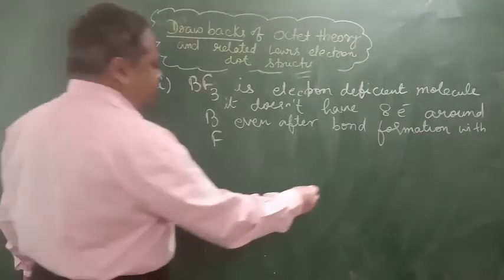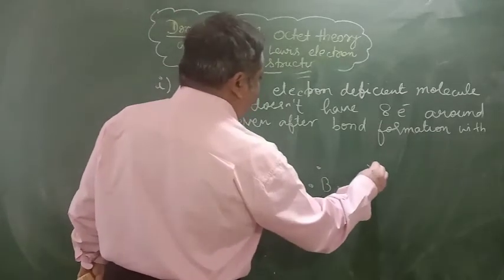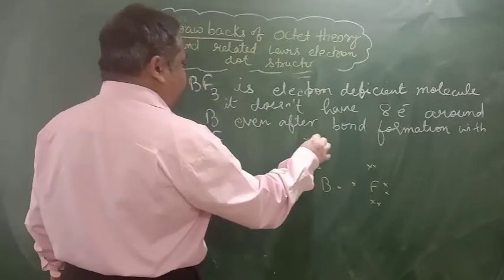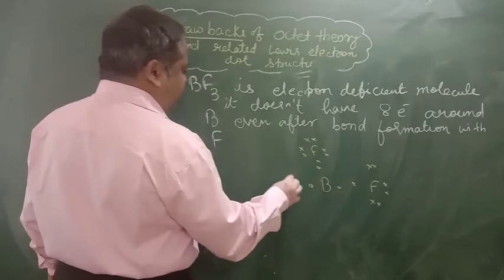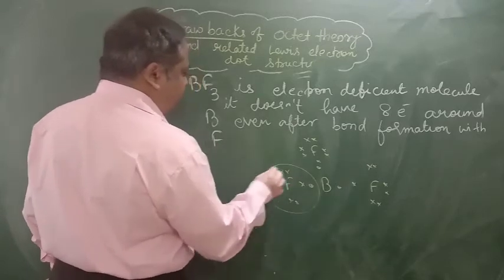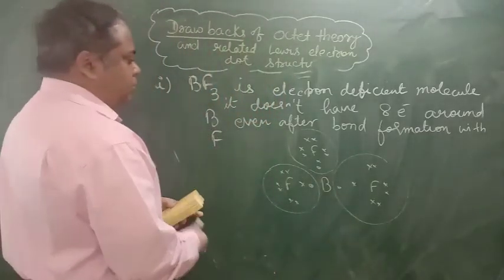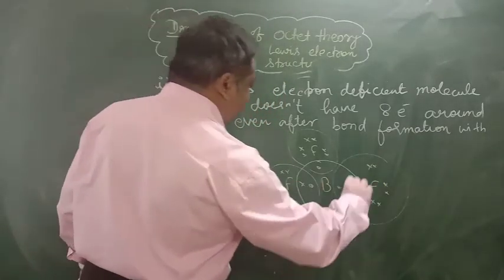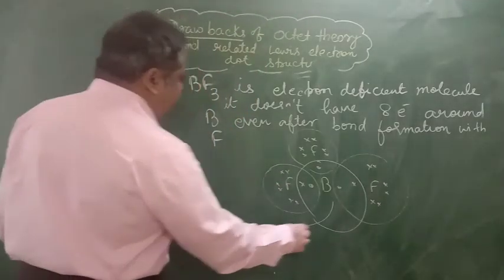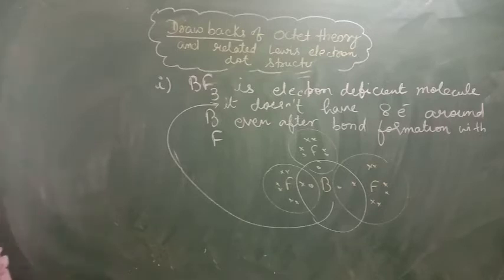I can draw it once again. See? 1, 2, 3 and fluorine 1, 2, 3, 4, 5, 6, 7. See, boron is not having 8 electrons. It does not have 8 electrons. So this was one drawback.